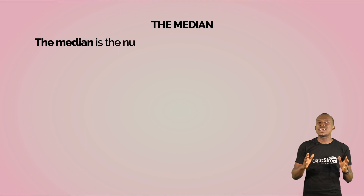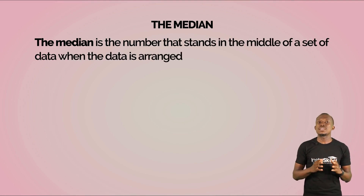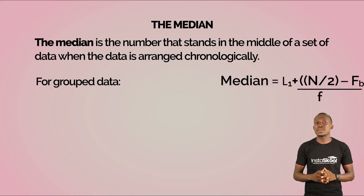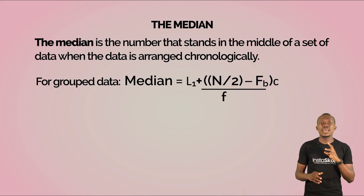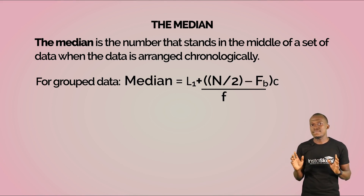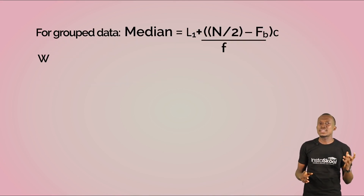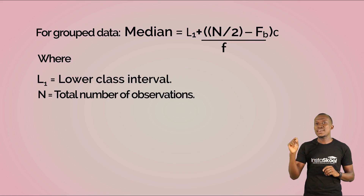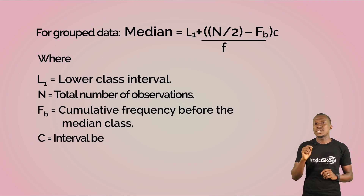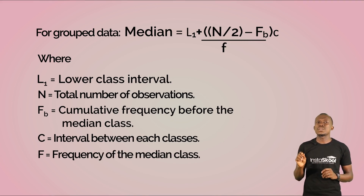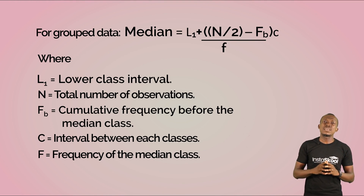The median is the number that stands in the middle of a set of data when the data is arranged chronologically. For group data, to get our median we use the formula: L1 + [(n/2 − fb) / f] × c. Here, L1 is the lower class interval of the median class, n is the total number of observations, fb is the cumulative frequency before the median class, c is the class interval width, and f is the frequency of the median class.